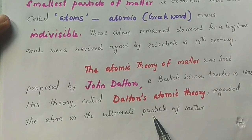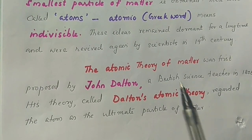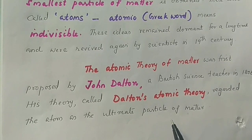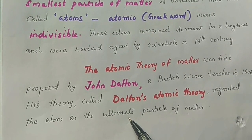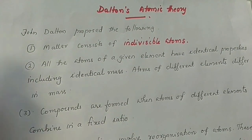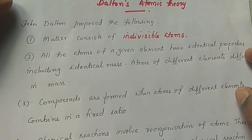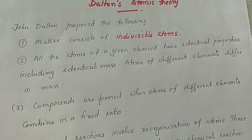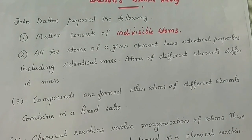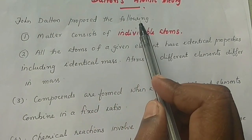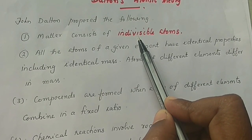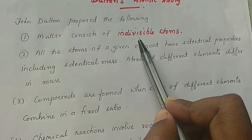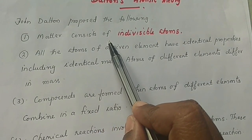The atom was regarded as the ultimate particle of matter — the main concept being that the atom is indivisible. The first postulate of Dalton's atomic theory: matter consists of indivisible atoms.